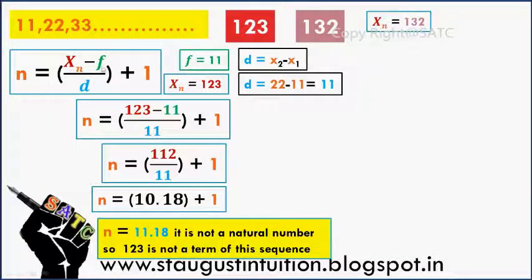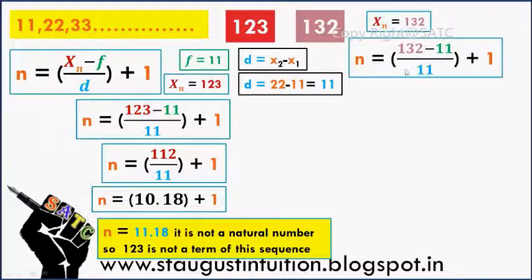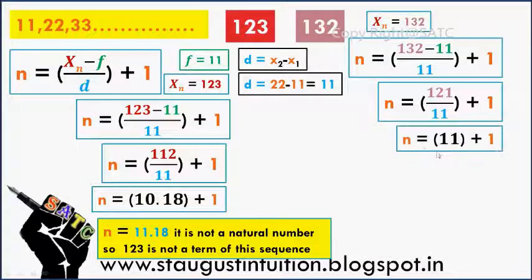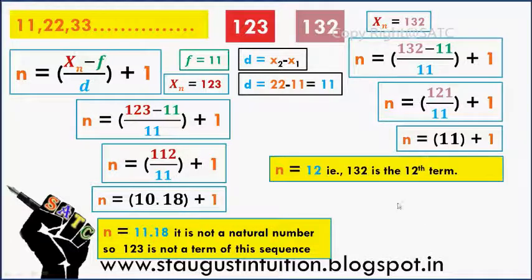The value of xn will be 132. x minus first term, divided by common difference plus 1. So here we are going to get 10 by 11, then 11 by 11, and then 12.